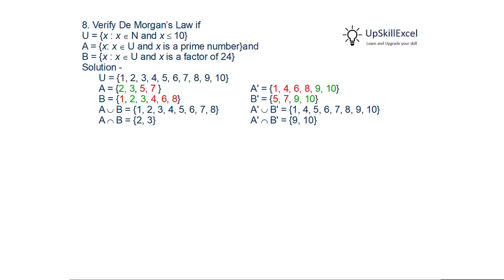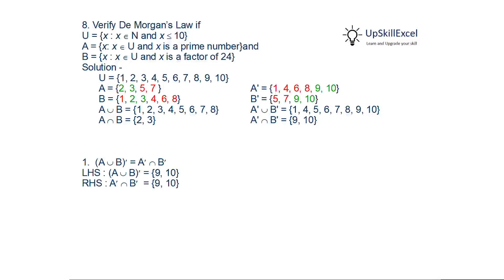A intersection B = {2,3} and A complement intersection B complement = {9,10}. De Morgan's first law states that (A union B) complement equals A complement intersection B complement. A union B is all numbers except 9 and 10, so (A union B) complement = {9,10}. From the right-hand side, A complement intersection B complement is also {9,10}. Thus the first identity is validated.